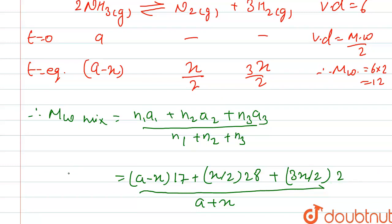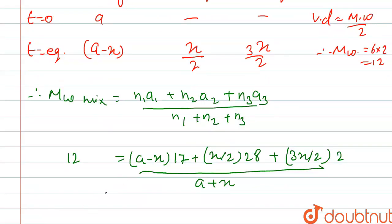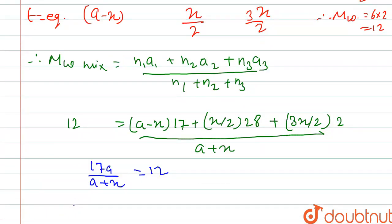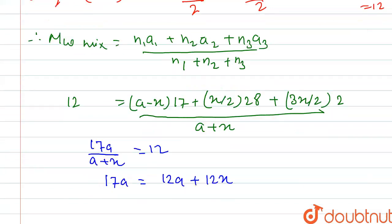If we solve this, we get 17a divided by (a+x) equals 12. So 17a equals 12a plus 12x, therefore 5a equals 12x.